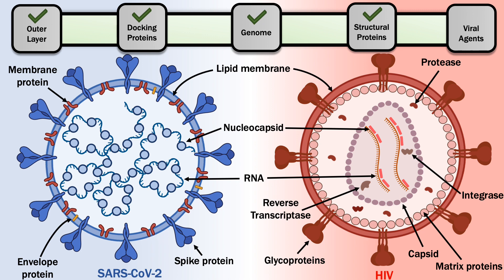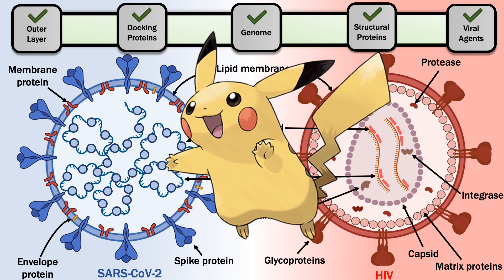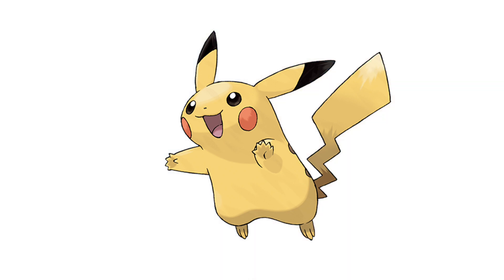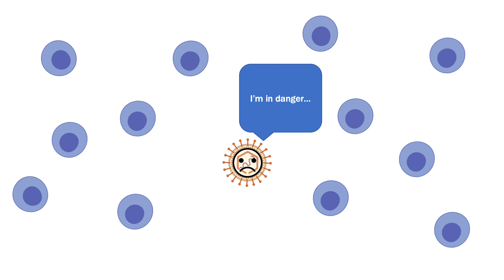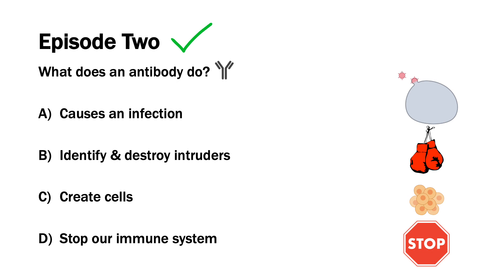And there we have it. We've just gone through some of the major structures of both these viruses and briefly discussed their important roles. Like our favourite Pokemon — there's Pikachu — these viruses have different abilities which determine how they infect our cells. But Pokemon can always get defeated by a certain move or attack, and in our case we can find ways to defeat these viruses through our immune system, which we'll talk about in our next episode. I want to leave you with a question for our next topic: you may have heard the word antibody before, and it does have something to do with the immune system — but what exactly? Does it cause an infection, identify and destroy intruders like viruses, create cells, or stop our immune system? We'll answer this in our next episode — thanks for tuning in and we'll see you soon. Good luck.